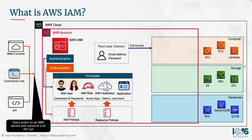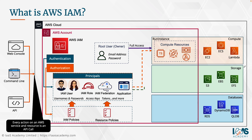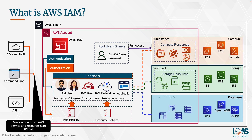Once your principals have been authenticated on the AWS platform and authorized with a set of permissions that give them the right to do certain tasks, they can go and perform those tasks. For instance, they may provision AWS compute resources like running EC2 instances or deploying a Lambda function. They may create some S3 buckets, some block storage, and perform certain API calls like GetObject to retrieve data from those storage services. They may even provision databases on the AWS platform — for example, running an API call to create DB instances. Every action these principals perform on the AWS platform is an API call, and in order for those API calls to take place, those principals need to be authenticated and authorized on the AWS platform.